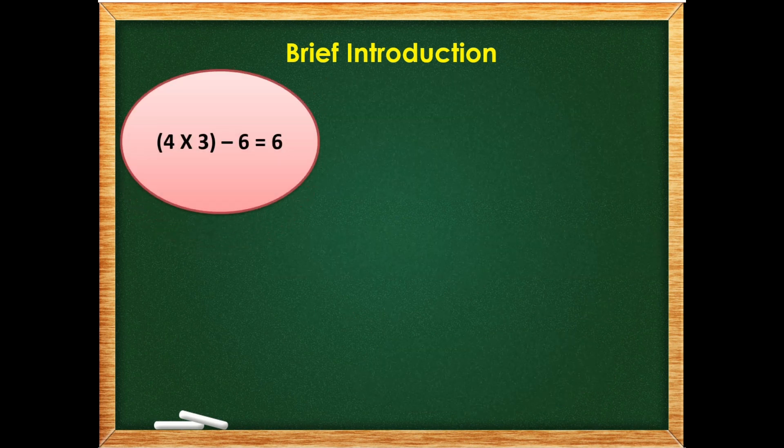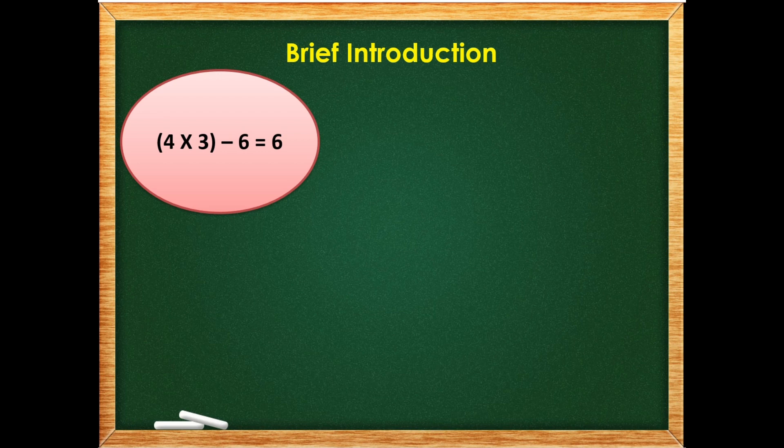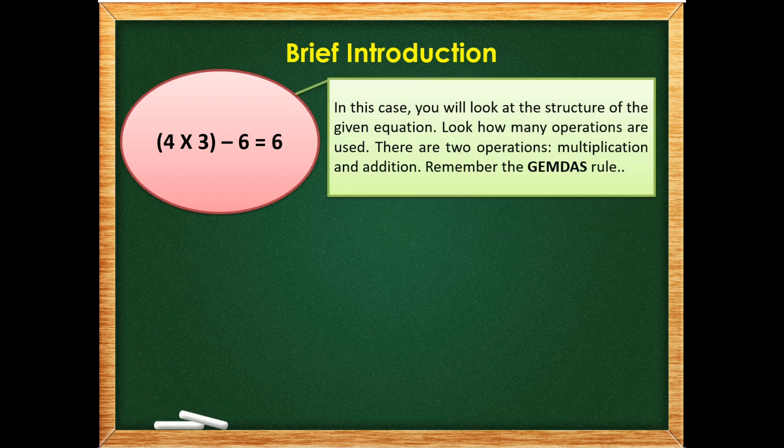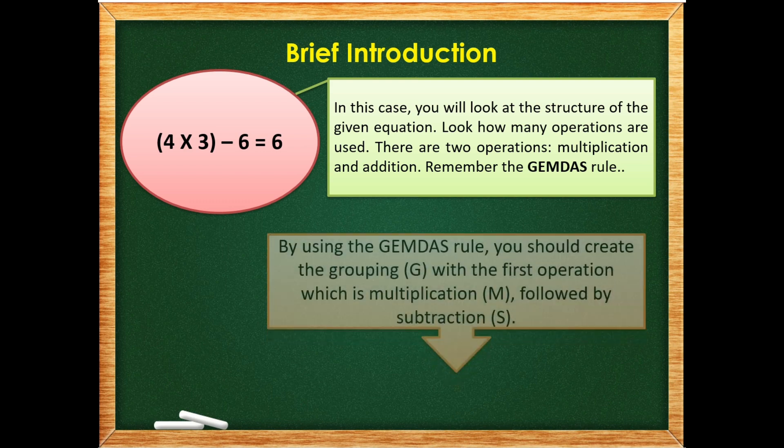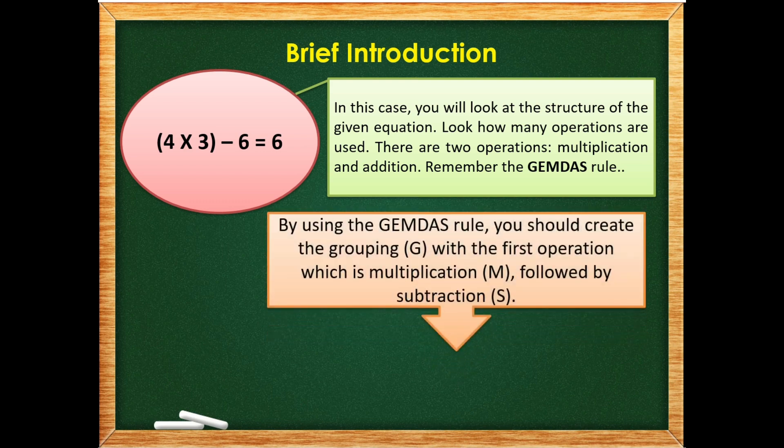Now, let's proceed to our example number three. We have 24 times 3, minus 6, is equal to 6. In this case, we will look at the structure of the given equation. Look how many operations are used. There are two operations, multiplication and addition. So, remember the GEMDAS rule. So by using the GEMDAS rule, you should create the grouping, or the G, with the first operation, which is multiplication, or M, followed by the subtraction, or S.